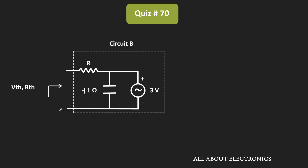The Thevenin's equivalent voltage is the voltage which is seen between these two terminals. Since these two terminals are open circuited, no current is flowing through this resistor R. That means the voltage appearing between these two terminals is the Thevenin's equivalent voltage, and hence Vth is equal to 3V.